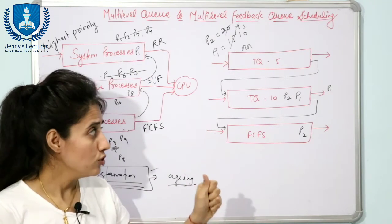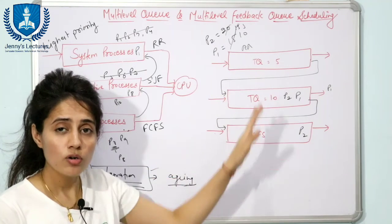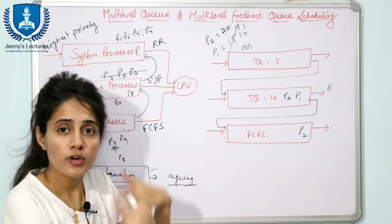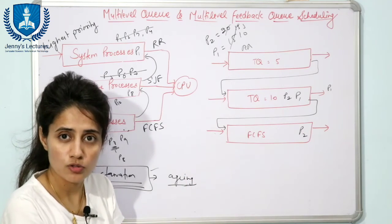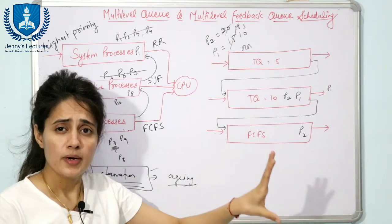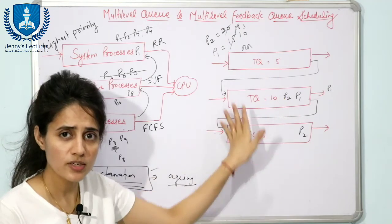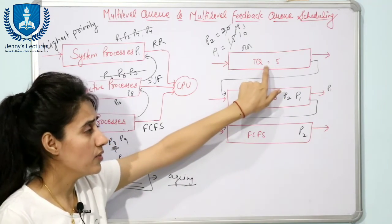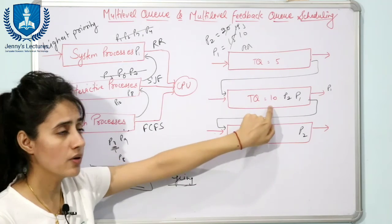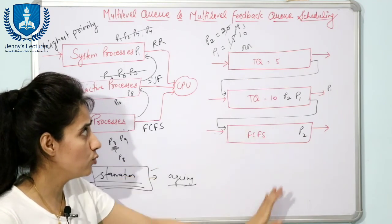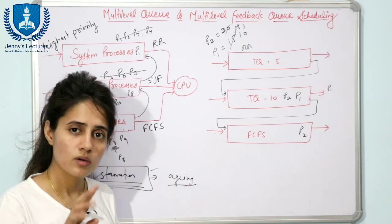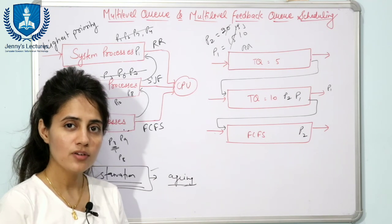The implementation of multi-level feedback queue scheduling is complex, and the algorithm depends on many factors: how many queues there are, when to promote or demote a process, and which scheduling algorithm each queue uses. It all depends on the implementer. For example, one might use five queues all with round-robin but different time quanta. This concludes the discussion of multi-level queue and multi-level feedback queue scheduling algorithms.